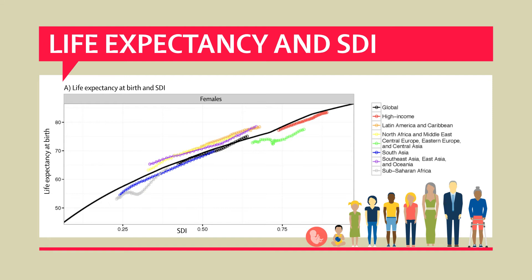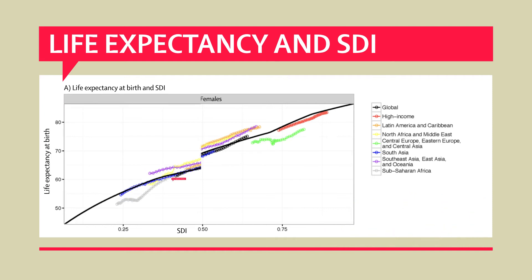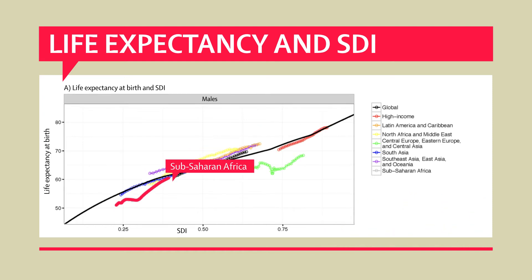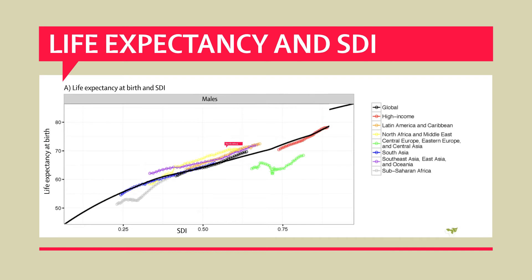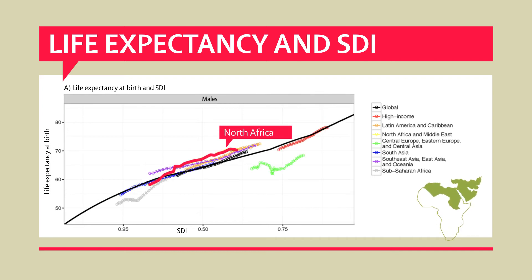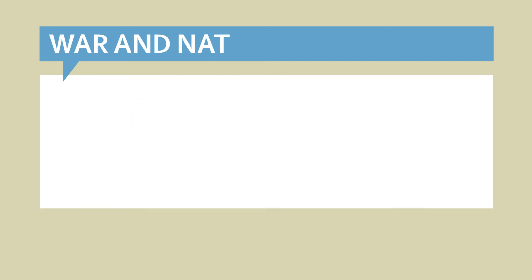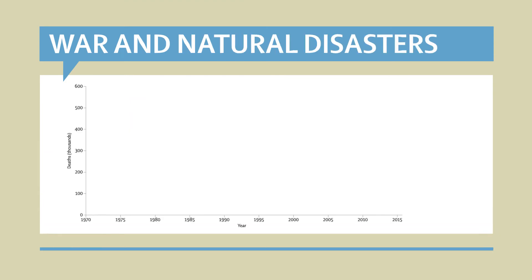While in some regions life expectancy closely relates to SDI, other regions are further away. In Sub-Saharan Africa, the dip in life expectancy is mostly due to HIV. For Central Europe, the cause is alcohol-related deaths. And North Africa has better life expectancy than that predicted by SDI.